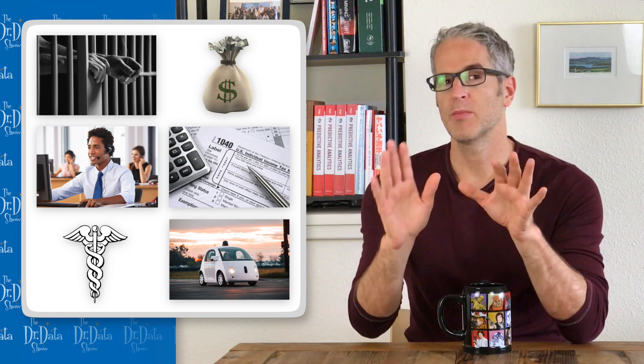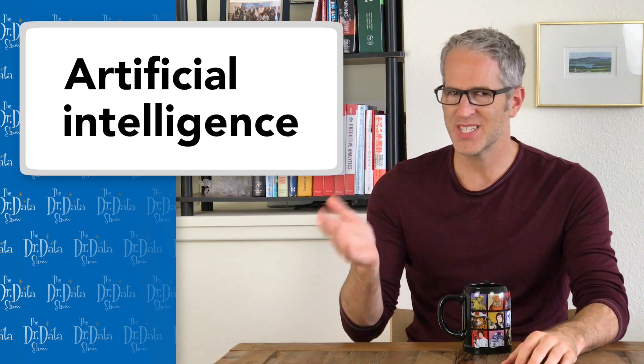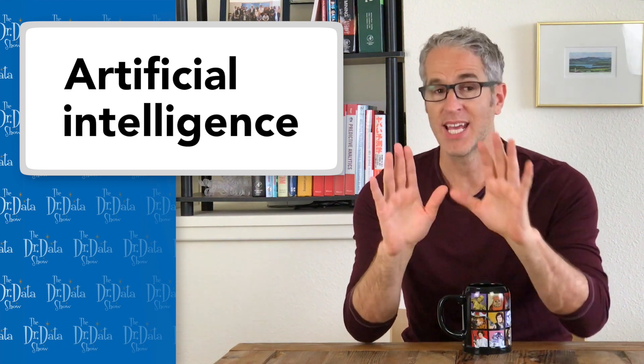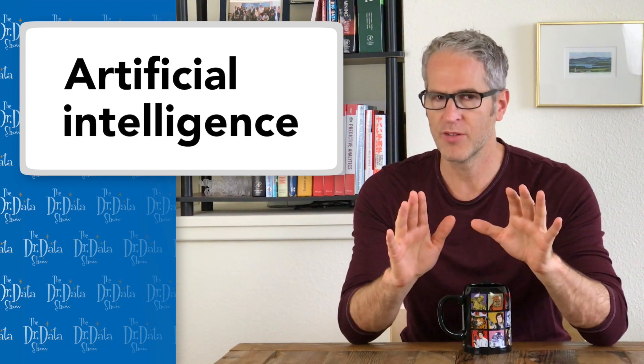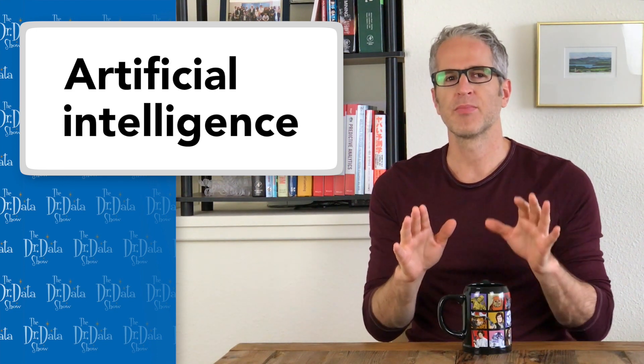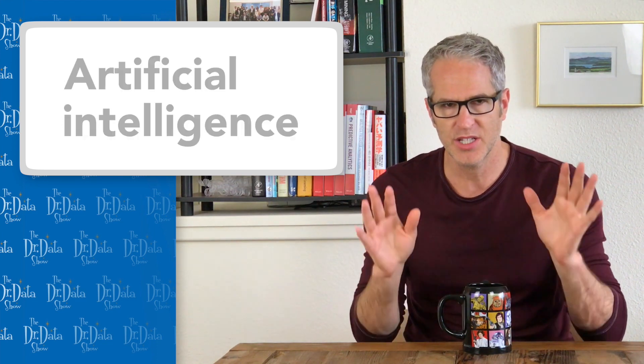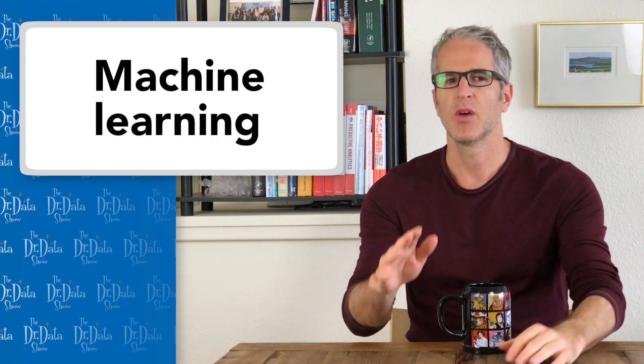Now, when our machines take on such responsibilities, we often call it artificial intelligence. But that's a fuzzy term with no agreed definition and can pretty much mean whatever the heck you want it to mean. Instead, there's a better word for it because in actuality, for automating such challenging decision-making, the particular technology that's deployed is machine learning, when computers learn from experience.